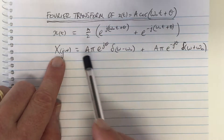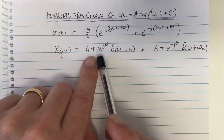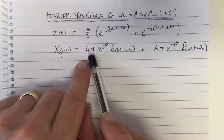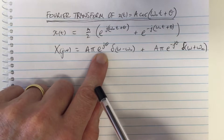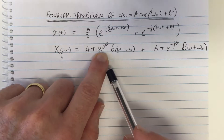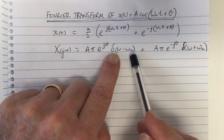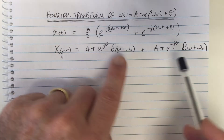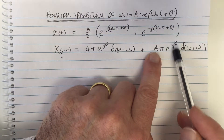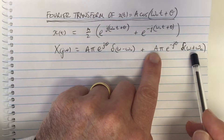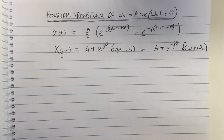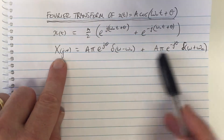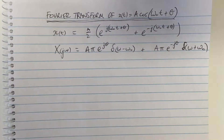Here's the Fourier transform of the cosine wave. If we just look at this second line, it's got an amplitude of A times pi. There's also a complex multiple of e to the j*theta times one of the delta functions, plus a similar gain but with a negative theta on the other delta function. What does this mean? I'd like to think about that and try to unpack it to have a physical interpretation of what this equation means.